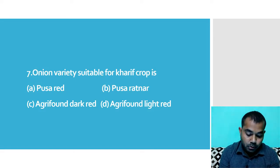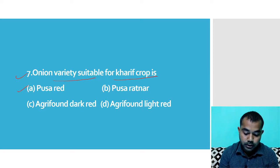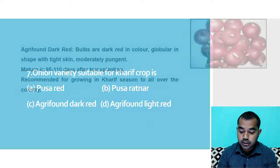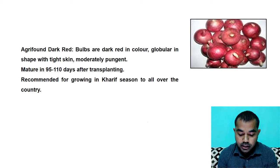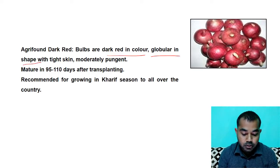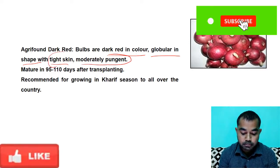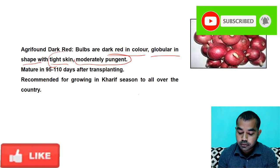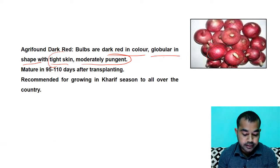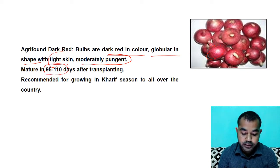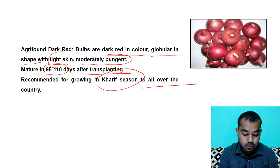The seventh question: which onion variety is suitable for Kharif season? Options are Pusa Red, Pusa Ratna, Agrifound Dark Red, and Agrifound Light Red. The right answer is Agrifound Dark Red. It is dark red in color, globular in shape, with tight skin and moderate pungency. Maturity is 95 to 110 days after transplanting, and it is recommended to grow in the Kharif season all over the country.